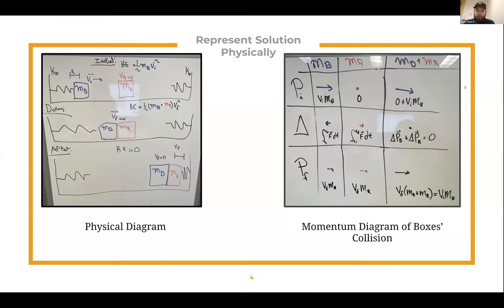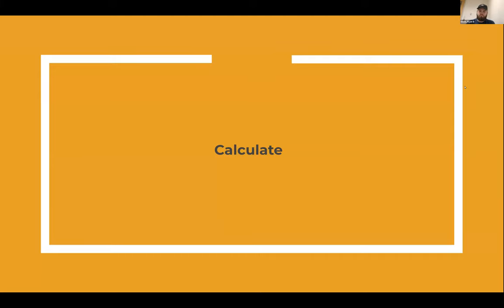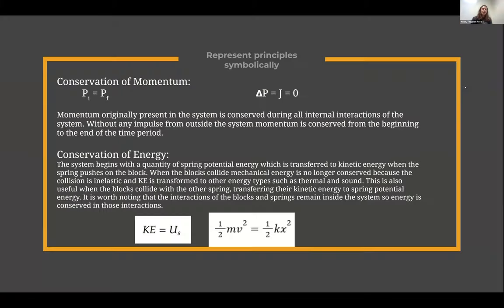We also have a physical diagram representing how the boxes are moving in the system, and a momentum diagram showing how momentum changes throughout the system. The next step was to do some calculations to determine the maximum displacement of the second spring. Before starting, we identified relevant principles that could help solve the problem.